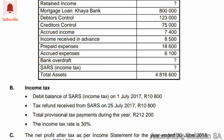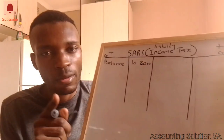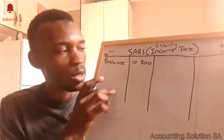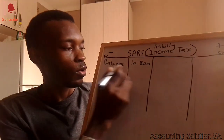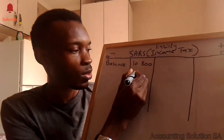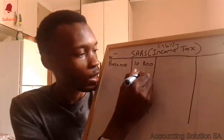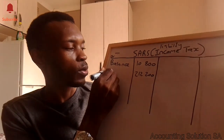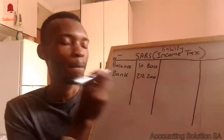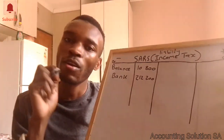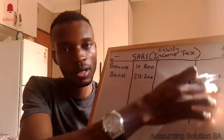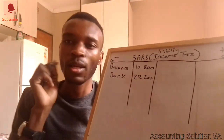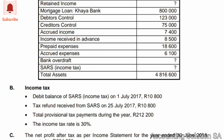The next item: provisional tax payments during the year total 212,200. We are making a payment to SARS, which means we are reducing our liability. So we record a debit of 212,200 — we call it bank because it is a provisional payment to SARS, reducing the liability that we still owe.